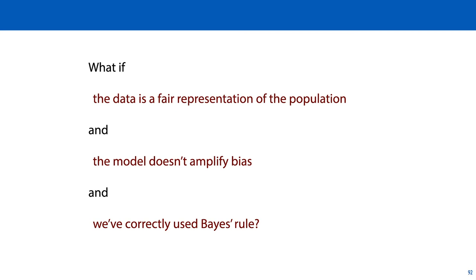So have we now covered all our bases? We get a data set that is a fair representation, our model doesn't amplify biases, and we somehow correctly use Bayes' rule. Can we then use the model to decide whether or not to stop black people in the street? The answer is still no. At this point, we may be certain that our predictions are accurate and that we have accurately estimated the probability that a particular black person uses drugs illicitly. However, the fact that those predictions are accurate tells us nothing about whether the action of then stopping a person will be effective, justified, or fair.